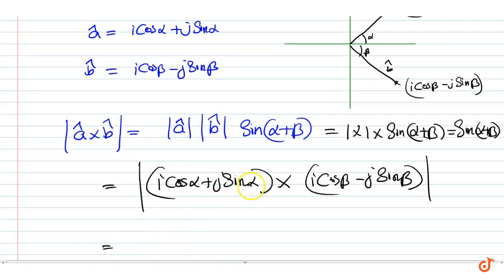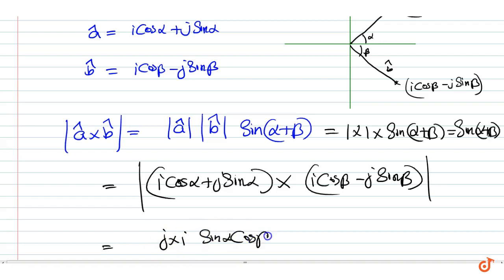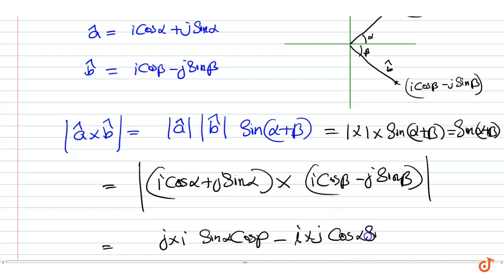This is also equal to the cross product of these two vectors expanded: i cross i cos alpha cos beta minus i cross j cos alpha sin beta plus j cross i sin alpha cos beta minus j cross j sin alpha sin beta, giving terms involving i cross j cos alpha sin beta and j cross i sin alpha cos beta.